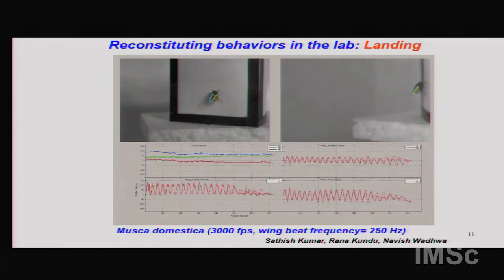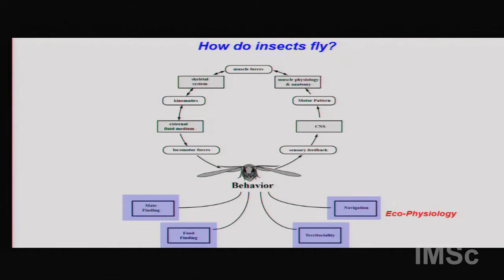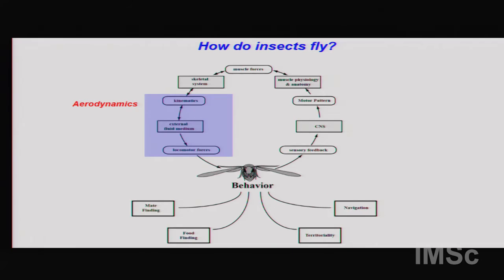We can track the wings in three dimensions, and the resulting graphs show wing movement over time. The two lines — one for each wing — are nearly superimposed because the wings are extremely symmetric. And just as the fly is about to land, you see a huge drop in wing beat amplitude. This gives us the three-dimensional kinematics of wing motion.